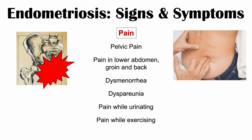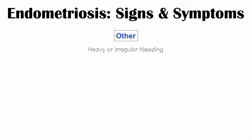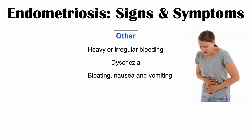There are other signs and symptoms of endometriosis as well. These include heavy or irregular bleeding during menstruation, dysgesia — constipation-like symptoms — bloating, nausea, and vomiting. Patients often have very significant pain, but also these additional signs and symptoms, all of which can have a significant impact on one's life.